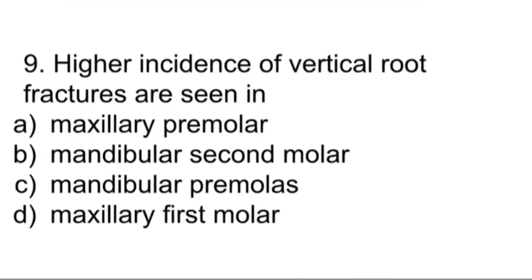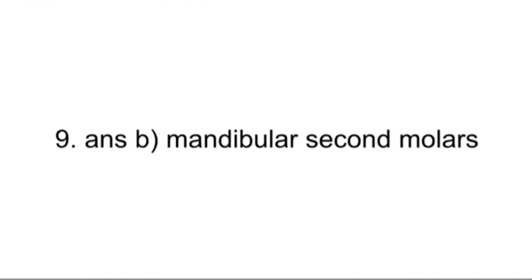Higher index of vertical root fractures are seen in which teeth? Options are maxillary premolars, mandibular second molars, mandibular premolars, and maxillary first molars. The answer is mandibular second molars — they are more prone to vertical fractures.